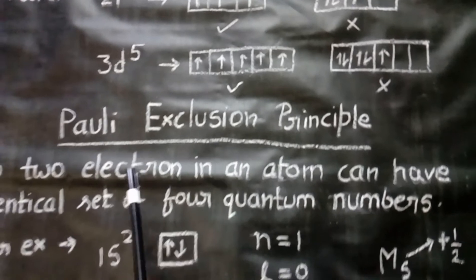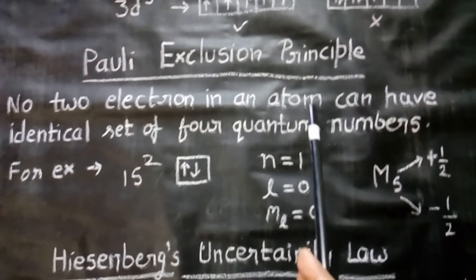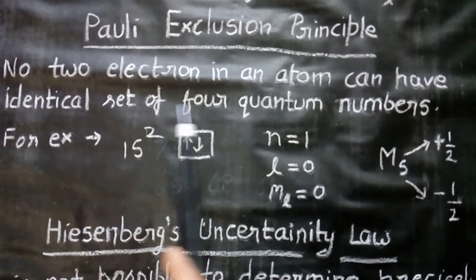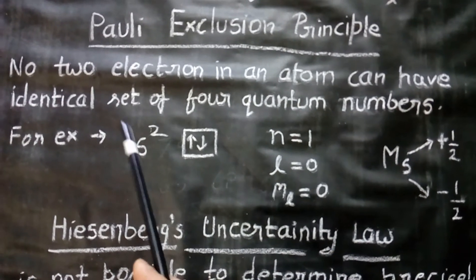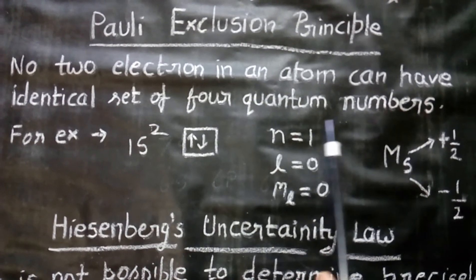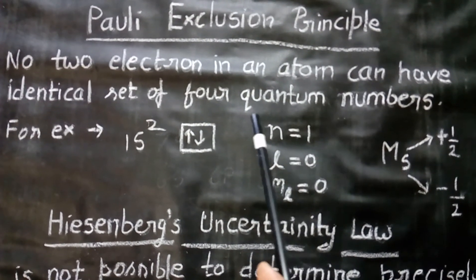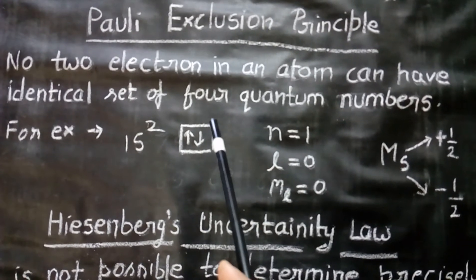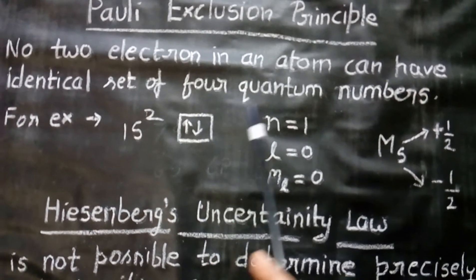Now, we consider Pauli's exclusion principle. According to this principle, no 2 electrons in an atom can have identical set of 4 quantum numbers. It means for each electron, there is a unique set of 4 quantum numbers.